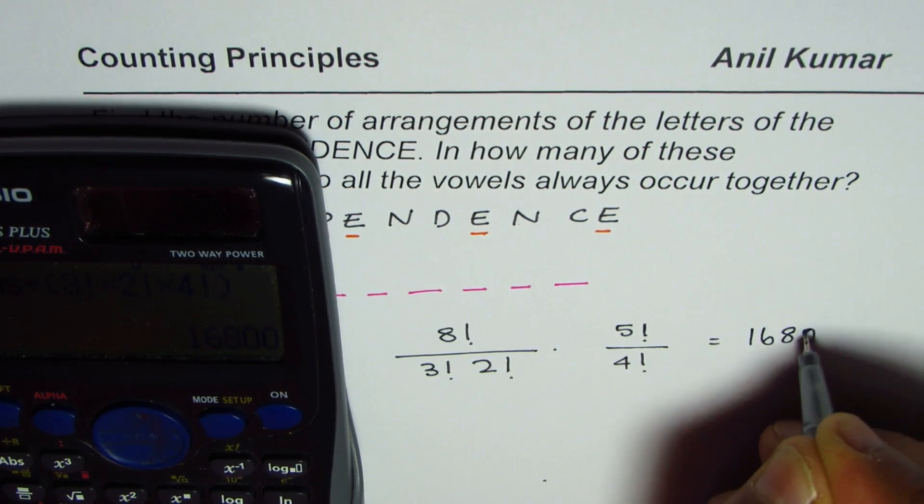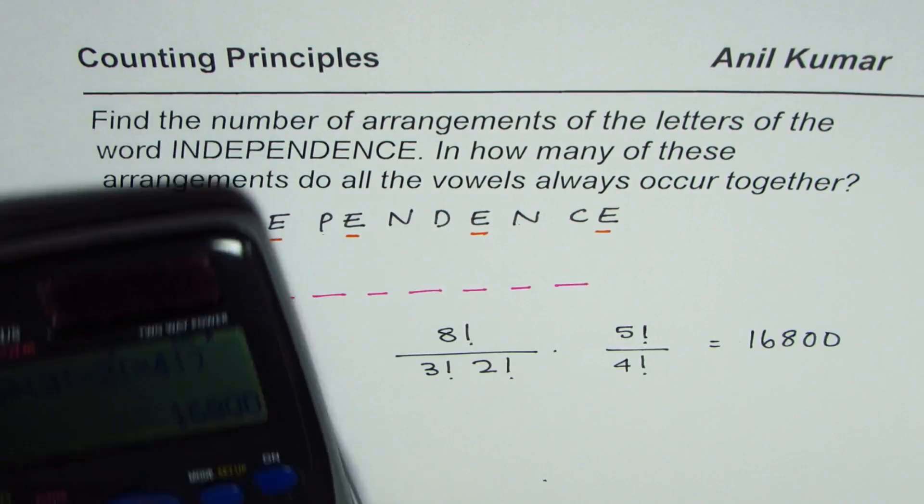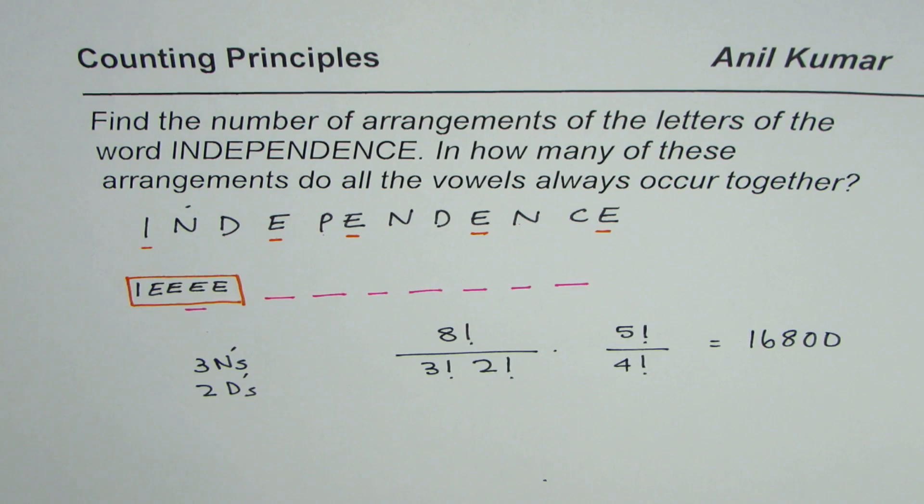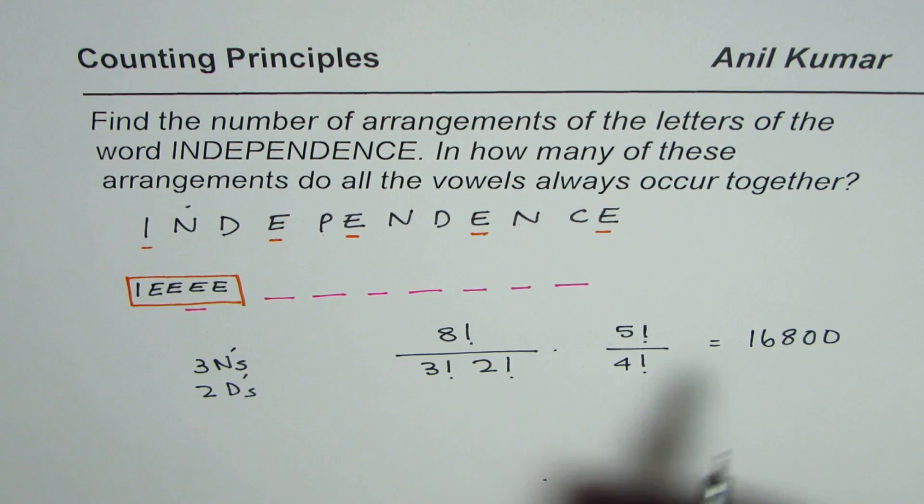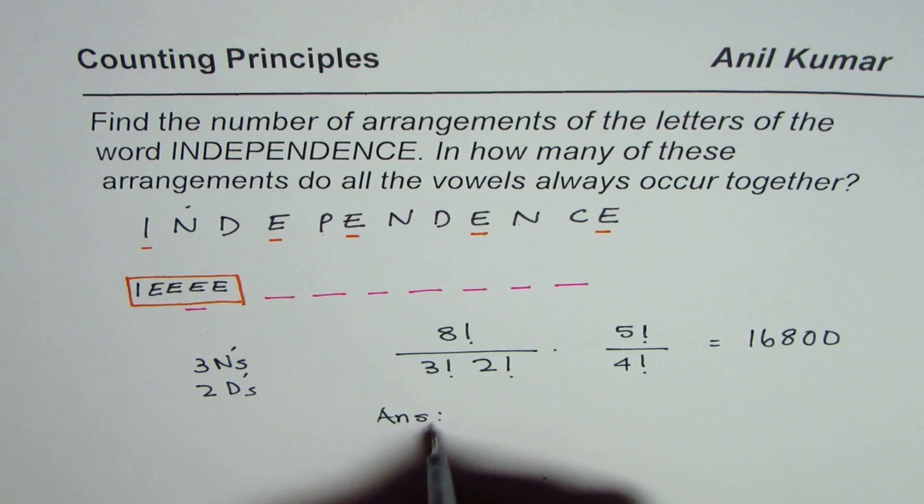This equals to 16,800. So those are the total number of ways in which we can arrange this word independence where all the vowels are together. So that is how we could do it.